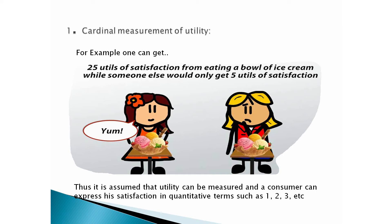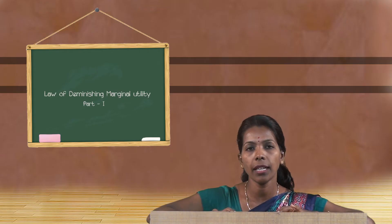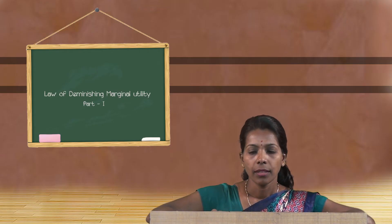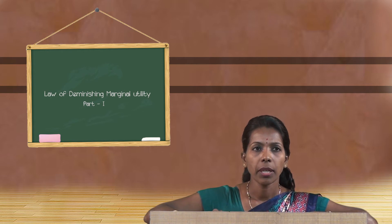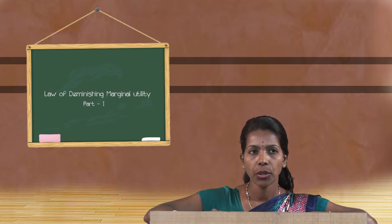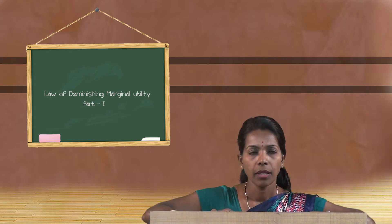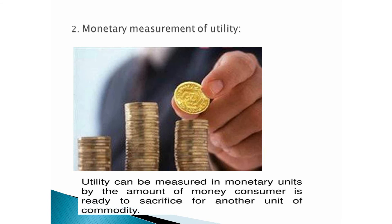The second assumption is monetary measurement of utility. Utility can be measured in monetary units by the amount of money a consumer is ready to sacrifice for another unit of a commodity.